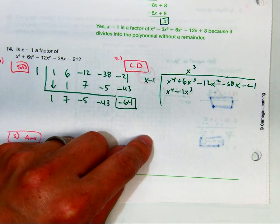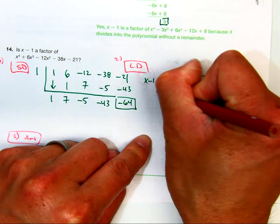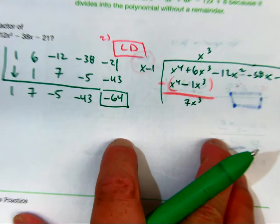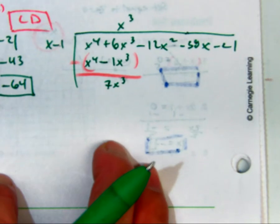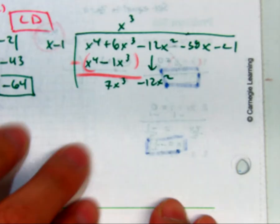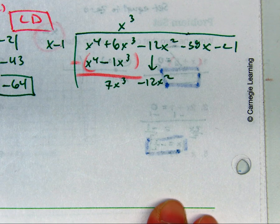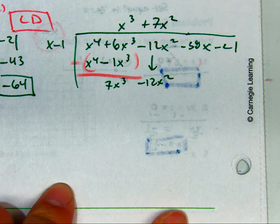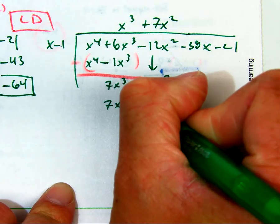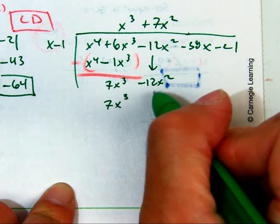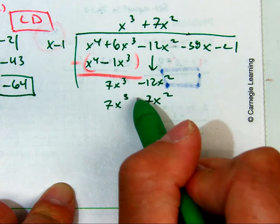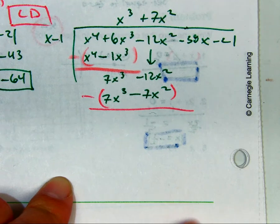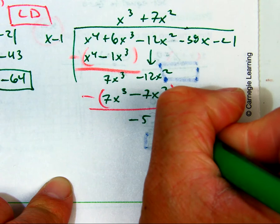So now we're going to subtract them. I'm going to get 7x to the 3rd. 7x to the 3rd is correct. Positive or minus? Minus. Add or subtract. Okay. Negative 5.